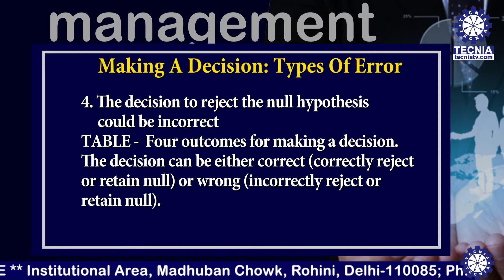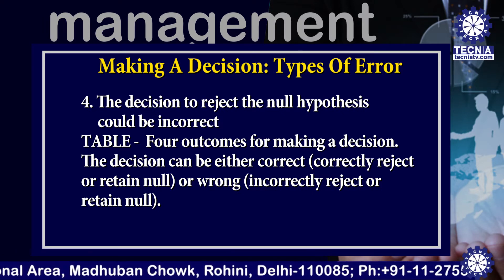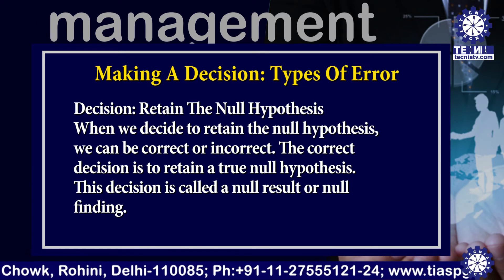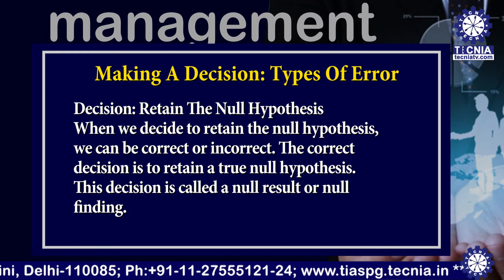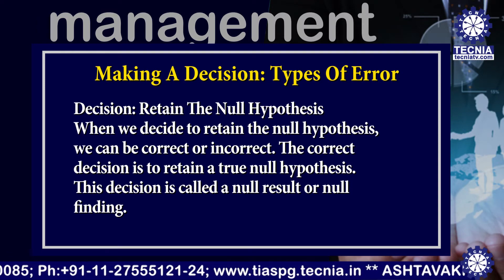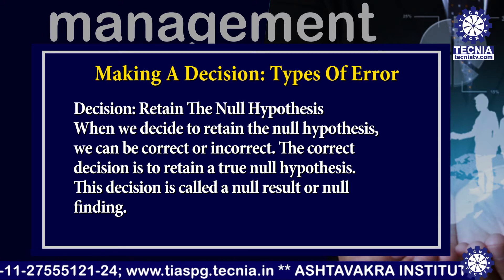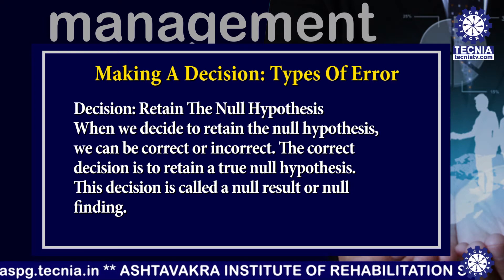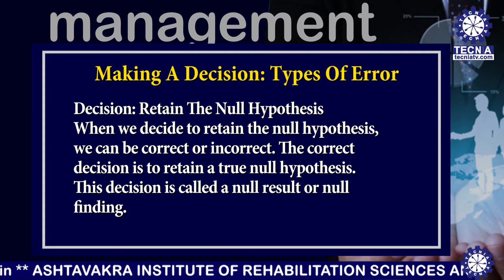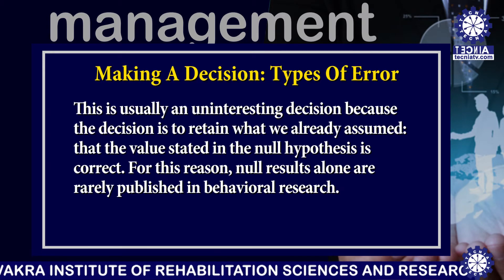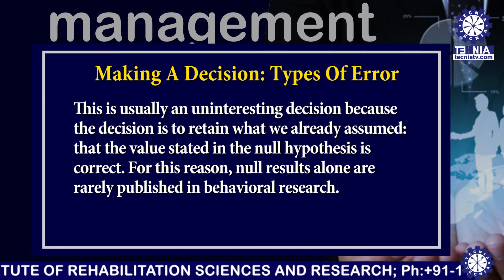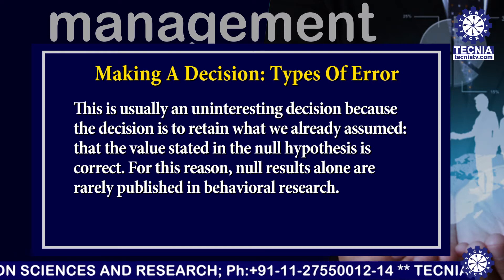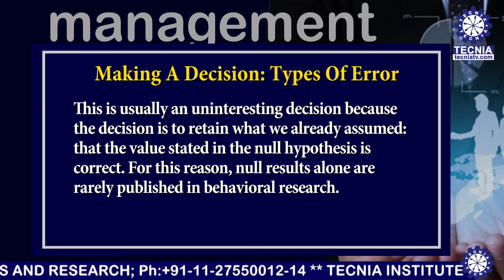In the following table you will find four outcomes for making a decision. The decision can be either correct or wrong. When we decide to retain the null hypothesis, we can be correct or incorrect. The correct decision is to retain a true null hypothesis. This decision is called a null result or null finding. This is usually an uninteresting decision because the decision is to retain what we already assumed — that the value stated in the null hypothesis is correct.